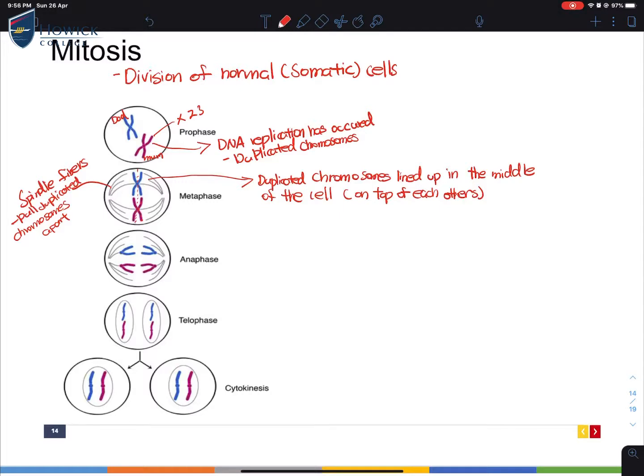In anaphase, this is where the duplicated chromosomes get separated. Eventually, after in the process of cytokinesis, this is where you get two identical daughter cells. You can think of cytokinesis as a process where the two cells are formed. Now you end up with two separate cells that are identical to each other.